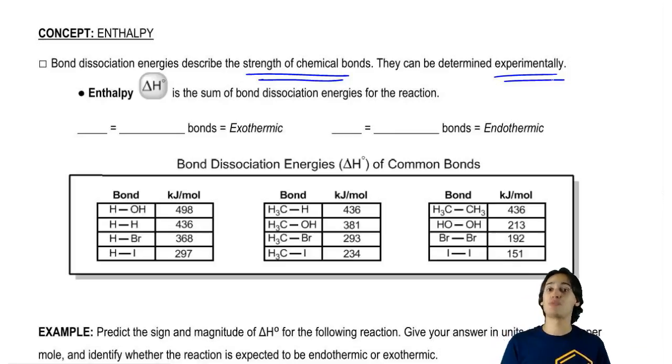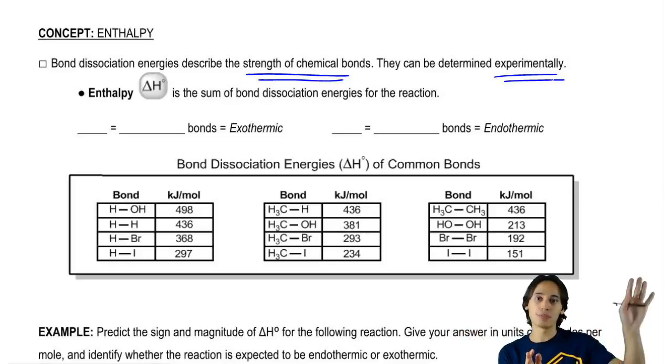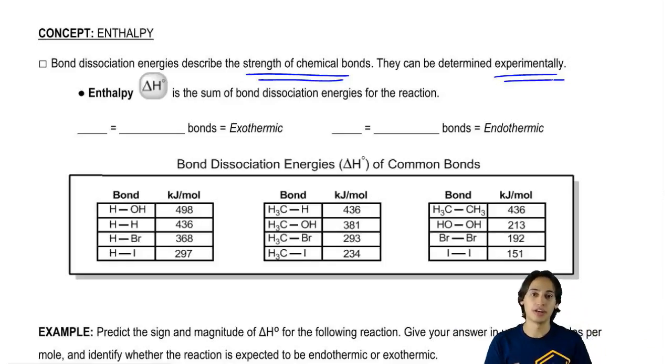Now keep in mind, just because we know the enthalpy doesn't mean that we actually know the spontaneity. Remember that the enthalpy is just one component of the spontaneity. We're also going to need to know the temperature and the delta S. But for right now, all we're worrying about is the delta H. We're just saying is this exothermic or endothermic.